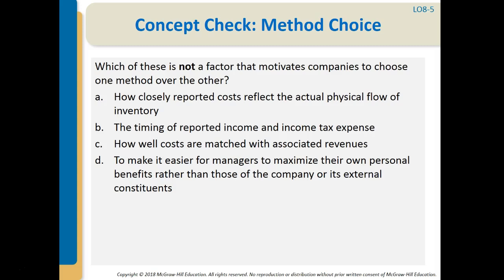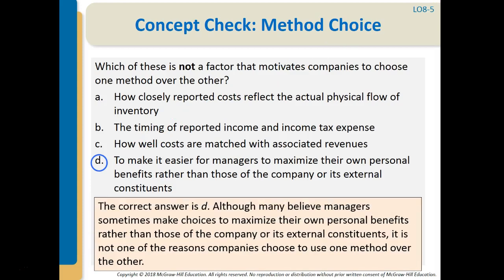So, which of these is not a factor that motivates companies to choose one method over another? A. How closely reported costs reflect the actual physical flow of inventory? B. The timing of reported income and income tax expense? C. How well costs are matched with associated revenues? D. To make it easier for managers to maximize their own personal benefits rather than those of the company or its external constituents? The answer is D — it's not one of the reasons companies choose to use one method over another.